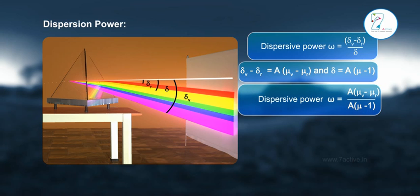Dispersive power: ω = (μᵥ - μᵣ) / [A(μ - 1)], which simplifies to ω = (μᵥ - μᵣ) / (μ - 1).